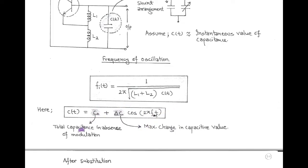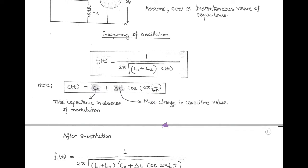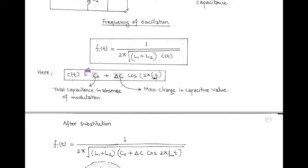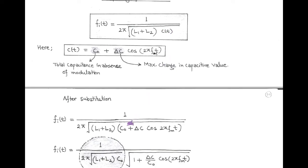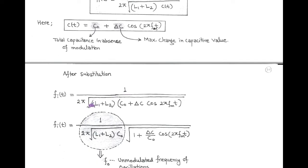Here C₀ is the total capacitance in the absence of modulation, and ΔC is the maximum change in capacitance value after modulation. Substituting the instantaneous capacitance into the formula for instantaneous frequency — that is, the frequency of oscillation — we get: instantaneous frequency equals 1 upon 2π times the square root of (L1 + L2) into (C₀ + ΔC cos(2π fm t)).